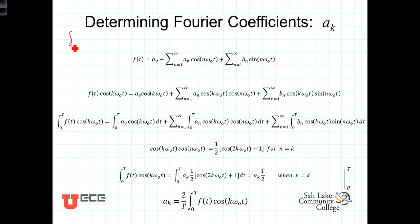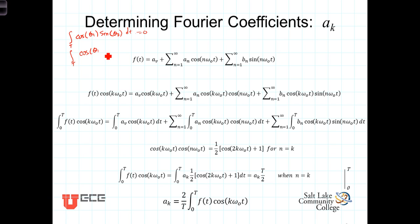First, the integral over the period of cosine of theta-1 times sine of theta-2, when theta-1 and theta-2 are integer multiples of the period, that integral equals zero. The other integral we're going to take advantage of is the integral over the period of cosine of theta-1 times cosine of theta-2. When theta-1 equals theta-2 this integral does not equal zero, but when theta-1 is not equal to theta-2 the integral goes to zero.